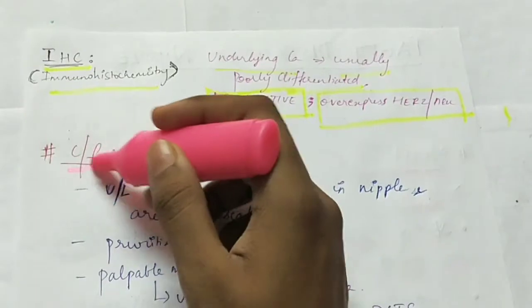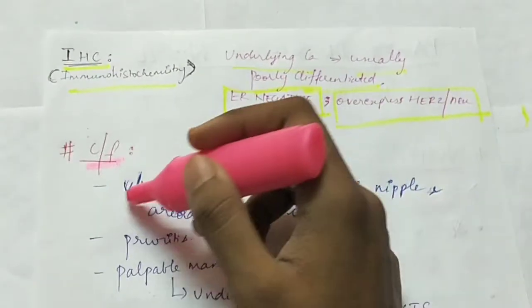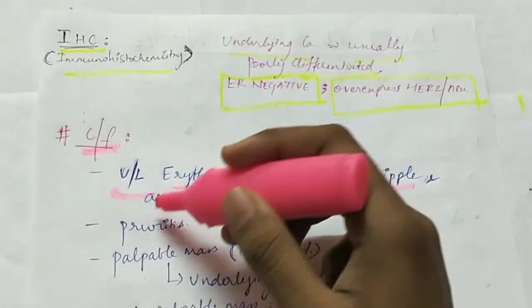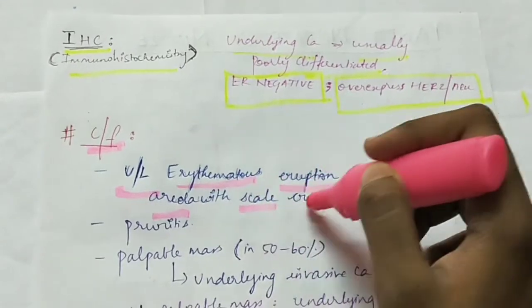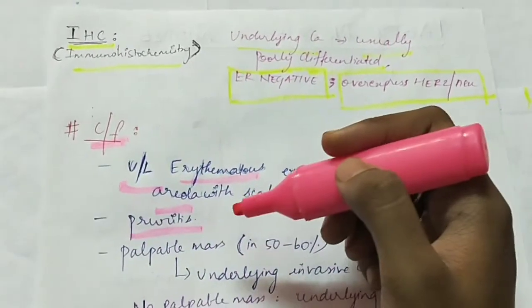Next, the clinical features of Paget's disease of the nipple. There is unilateral erythematous eruption in the nipple and the areola with scale crest. Then there is pruritus, that is itching.